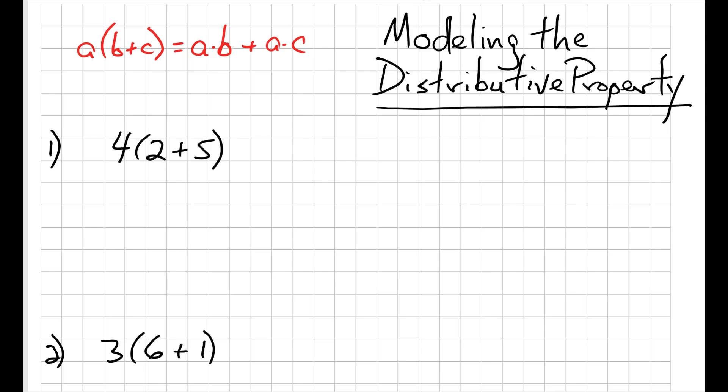So 2 plus 5, I'm going to model like this. 2 blocks plus 5 blocks. Now let's make the 2 blocks green, and let's make the 5 blocks orange. So that's what 2 plus 5 looks like,